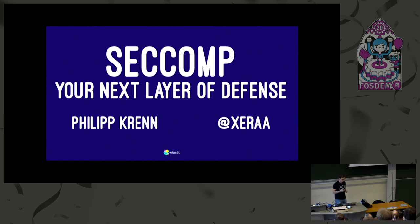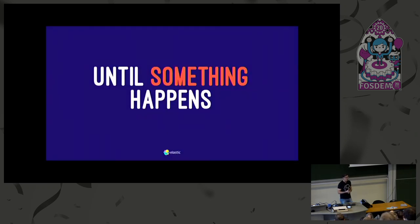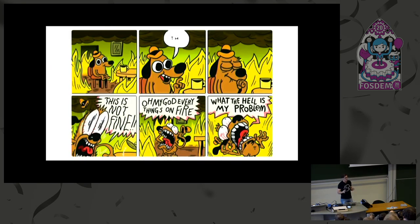SecComp, the secure computing model, is something that has been around for quite a while, but it's still not as widely used as you would wish. Generally, security-wise, this is us — everything is fine until something happens, and then nothing is fine anymore, everything is on fire and everything is terrible. Then you always wish you had something else to fix your security model. SecComp might be one piece in the big puzzle of security solutions that you could use to help fix stuff.